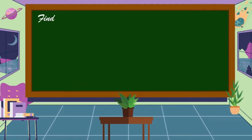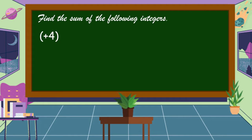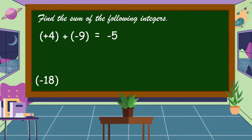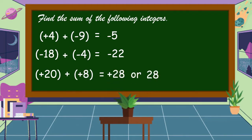Let's apply what you learned. Find the sum of the following integers — the sum is the answer of addition. Positive 4 plus negative 9 is equal to negative 5. How about negative 18 plus negative 4? The answer is negative 22. Another one: positive 20 plus positive 8. The answer is positive 28.